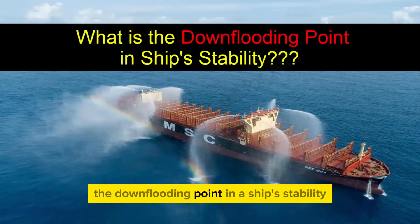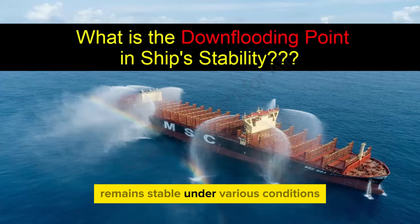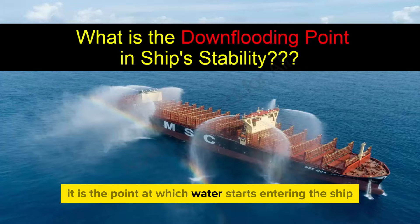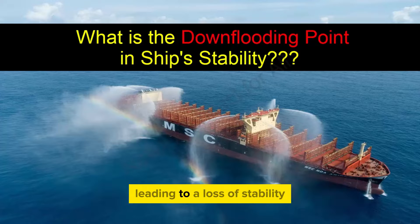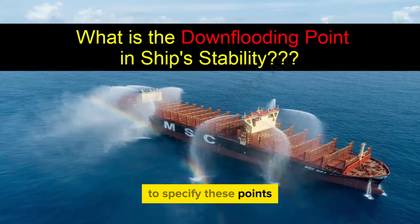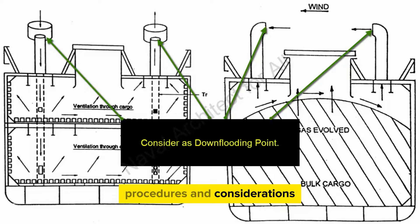The down-flooding point in a ship's stability is a critical parameter that designers consider to ensure the vessel remains stable under various conditions and does not capsize due to water ingress the hull. It is the point at which water starts entering the ship, leading to a loss of stability. To specify these points, naval architects and designers follow specific procedures and considerations.